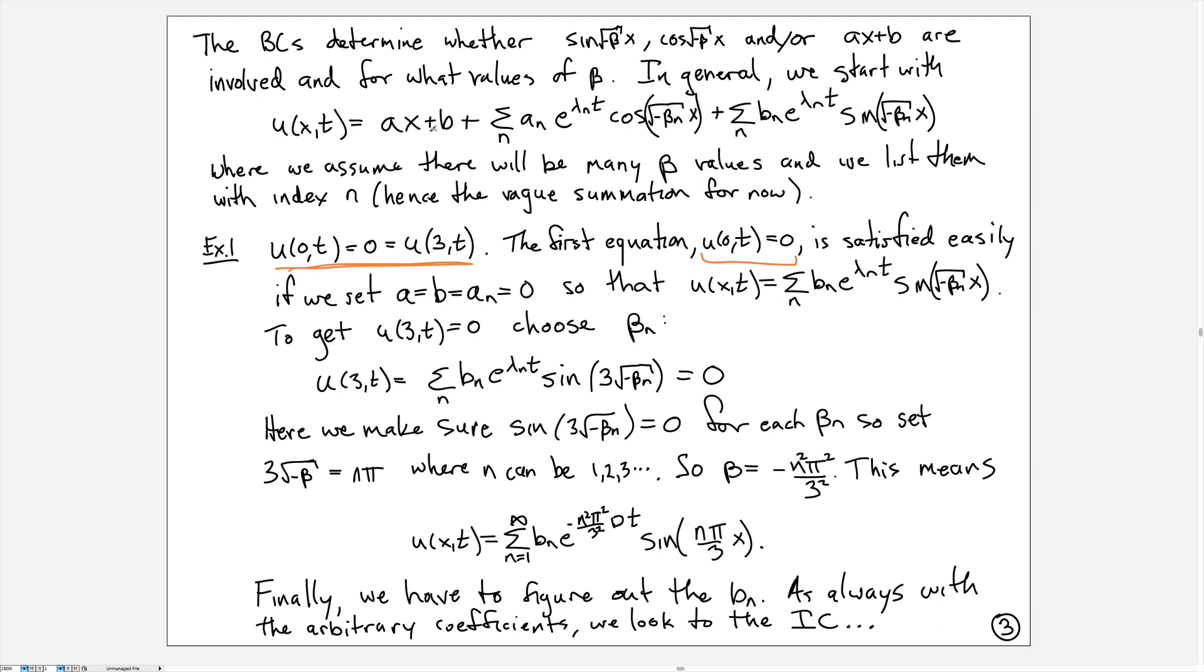Similarly, the steady state when you have zero Dirichlet conditions is necessarily going to be a zero line. That means we choose a = b = a_n all equal to zero. The only thing that we're left with in building our solution is a sum of these exponential times sine functions. Now we have to figure out what we can put in here. So we use the other boundary condition, the one at three, to determine that.